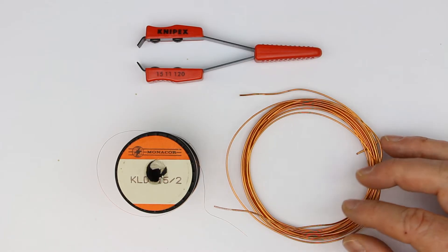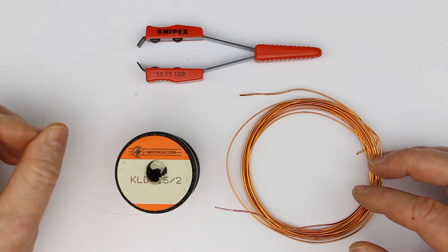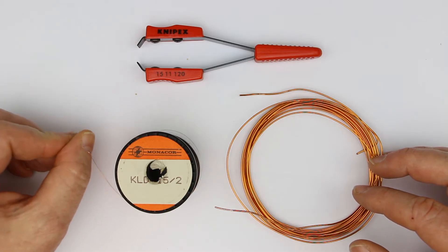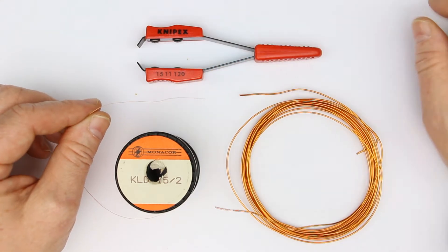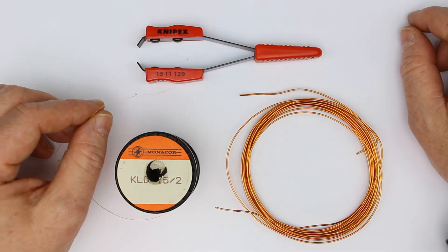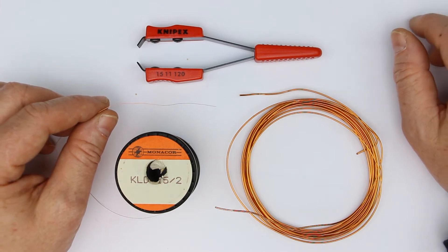Let's first take a look at thin or flexible copper wire, which I would say is in the range from 0.05 millimeters to 0.2 or 0.3 millimeters.